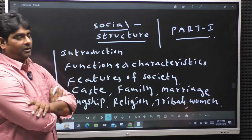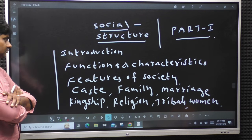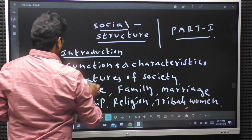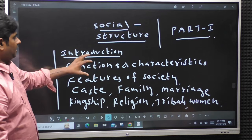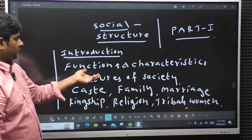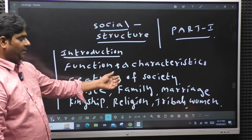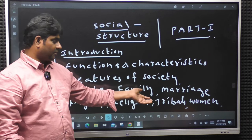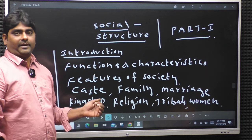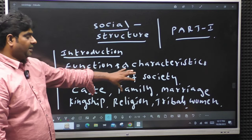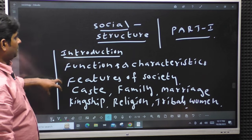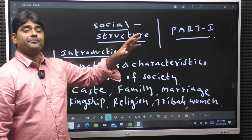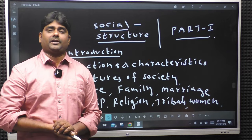The social structure includes introduction, functions, characteristics, features of society, caste and family, marriage, kingship, religion, tribals, and women. This is our ethnicity and social structure - this is what we can learn.